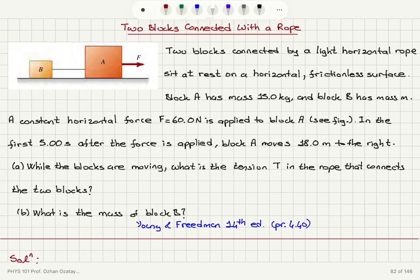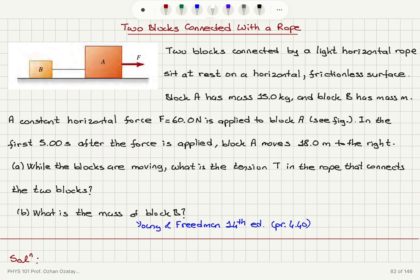Two blocks connected by a light horizontal rope sit at rest on a horizontal frictionless surface. Block A has mass 15 kilograms and block B has mass m. A constant horizontal force of 60 newtons is applied to block A horizontally. In the first five seconds after the force is applied, block A moves 18 meters to the right.